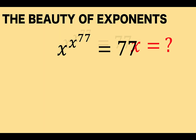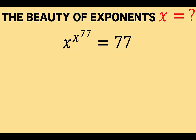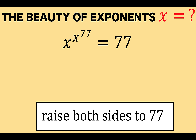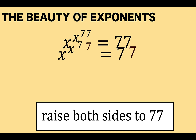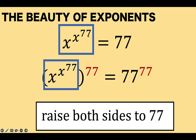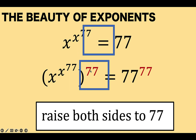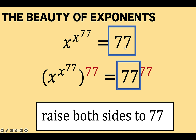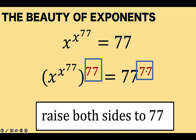Now, let's solve this problem together. The first thing we are going to do is raise both sides of the equation to 77. The reason behind that would be apparent later as we solve this problem. So, raising both sides to 77, this is what we have. The original left member of the equation is raised to 77, and on the right side, 77 is now the base raised to exponent 77.